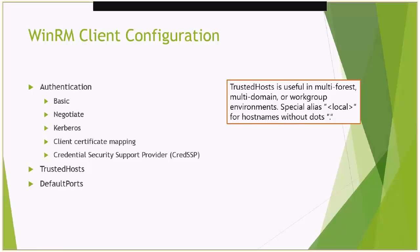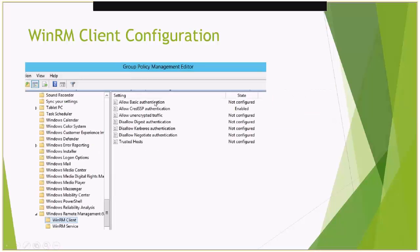You can also configure the default ports, so if you changed the default WinRM ports from 5985 and 5986, you can configure your clients so you don't have to specify those custom ports every time they make an outbound connection. There's also an option called Allow Unencrypted Traffic, which you can generally leave not configured because by default WinRM does encrypt its traffic.